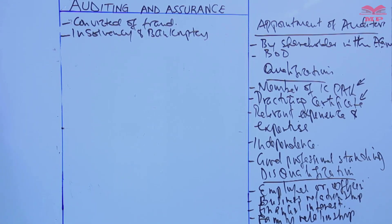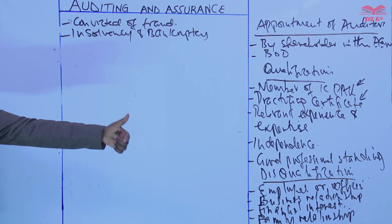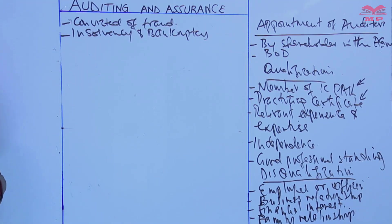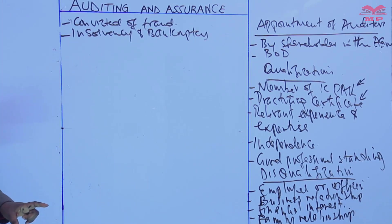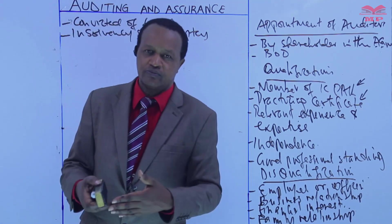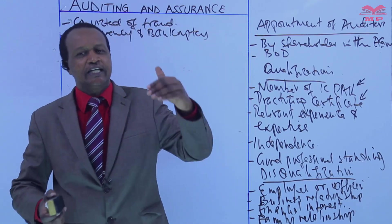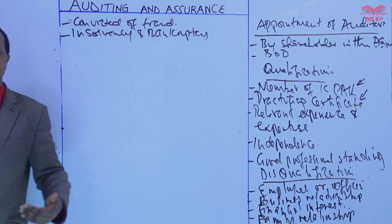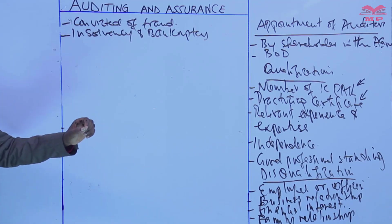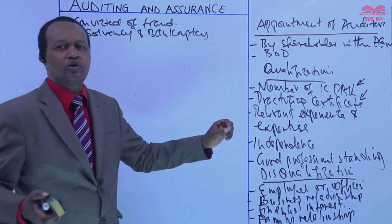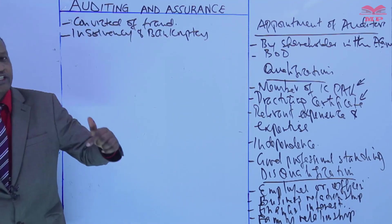There may be other disqualifications, as the Act empowers the Cabinet Secretary to prescribe additional disqualifications through legislation. What is important to note is that qualifications and disqualifications are designed to ensure that auditors are competent, independent, and ethical. Non-compliance with these requirements can result in the appointment being declared invalid and may lead to disciplinary action. Ultimately, the goal is to promote transparency, accountability, and trust in financial reporting.